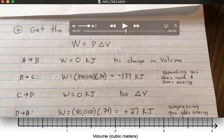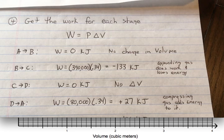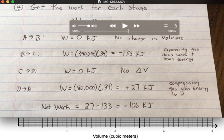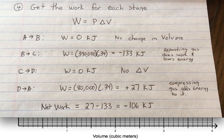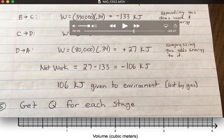C to D, our work is zero because, again, there's no change in volume. D to A, we have a work of 27 kilojoules for my setup. This time, it's positive because we're compressing the gas. This adds energy to it. I then look at all four of my works, and I get a network of minus 106 kilojoules. This means it did work to its environment. 106 kilojoules are given to the environment and lost by the gas.